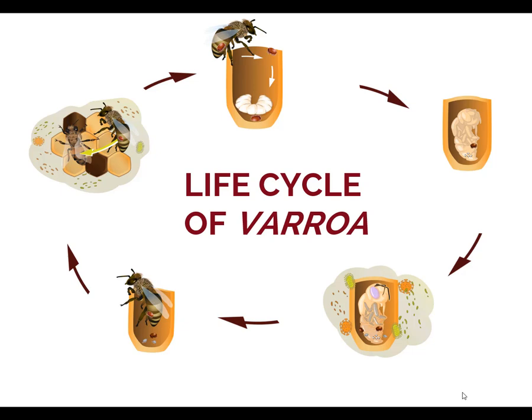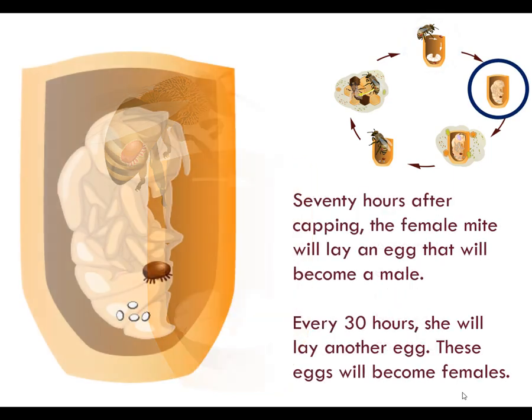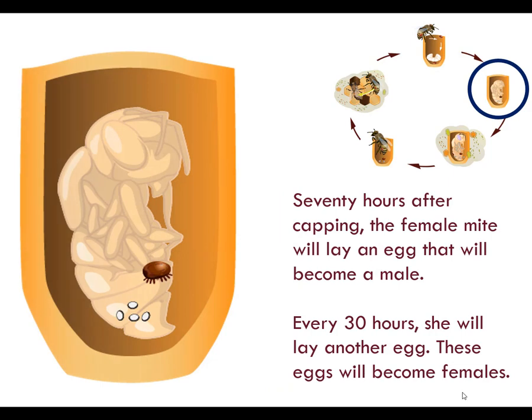In order to monitor and manage Varroa it is helpful and important to understand its life cycle. A female mite enters the cell of a larva just before it is capped. The Varroa mite crawls to the bottom of the cell underneath the honeybee larva. 70 hours after capping, the female mite will lay an egg that will become a male. Every 30 hours she will lay another egg. These eggs will become females.